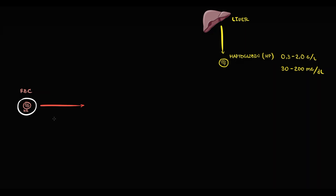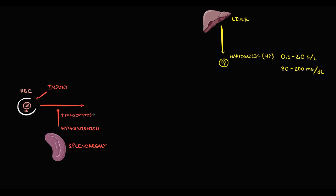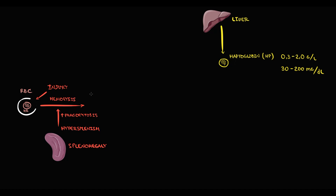Sometimes, pathogenic factors can cause severe damage to red blood cells. Or in the case of splenomegaly, hypersplenism can develop when macrophages in the spleen become overreactive and begin to overconsume red blood cells by phagocytosis. Both these conditions cause destruction of red blood cells, which we call hemolysis.